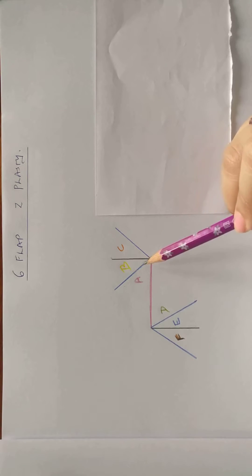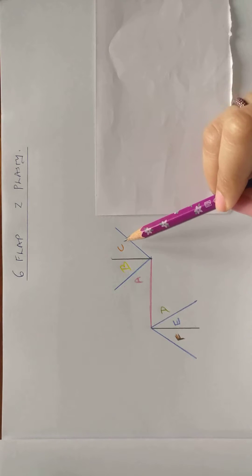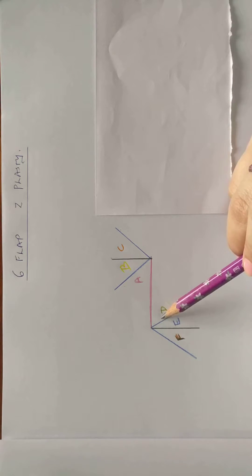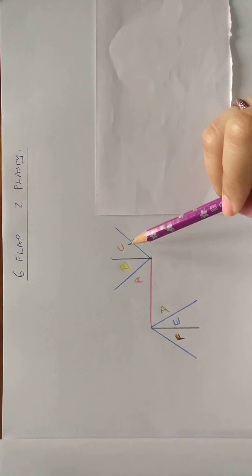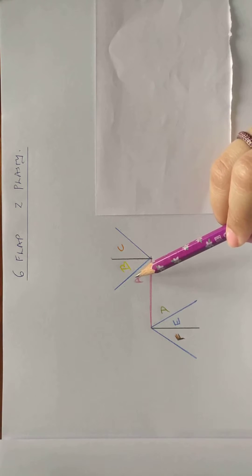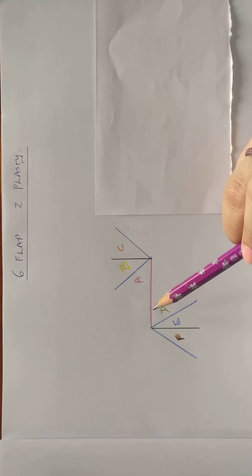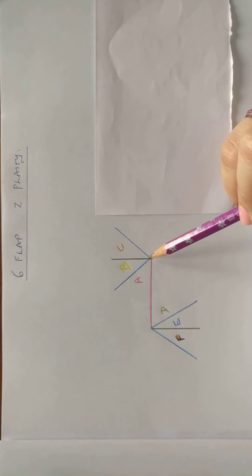Now on either side of this, further two limbs are marked upward as well as downward, and these are considered to be at 45 degrees. However, these angles can be modified depending upon the amount of tissue that is available. Hence we will have three flaps — A, B, and C — which are on the upper side, and D, E, and F which are on the lower side of the central limb, which is the scar.